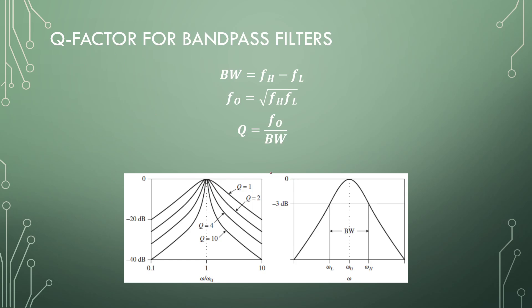First off, the two specifications that you will typically have for a bandpass filter are the bandwidth and the center frequency. That gives us our Q factor, which is where our whole design revolves around—the Q and the center frequency.